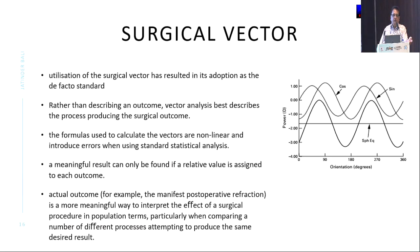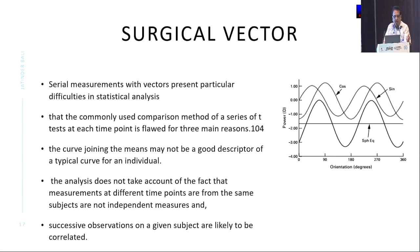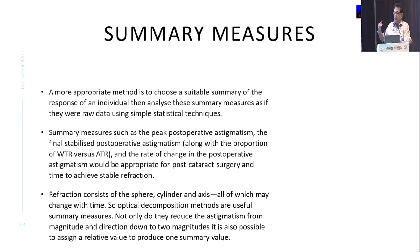This is important when we go in for statistical analysis. The surgical vector approach is widespread in its adoption, but rather than describing an outcome, it describes the process. Why is surgical vector analysis a misnomer? The vectors are measuring the same outcome over time, and people have been describing series of t-tests. The curve joining the means may not be a good descriptor, and it does not take into account that measurements at different points from the same subjects are not independent measures, as t-tests require. Successive measurements are likely to be correlated.